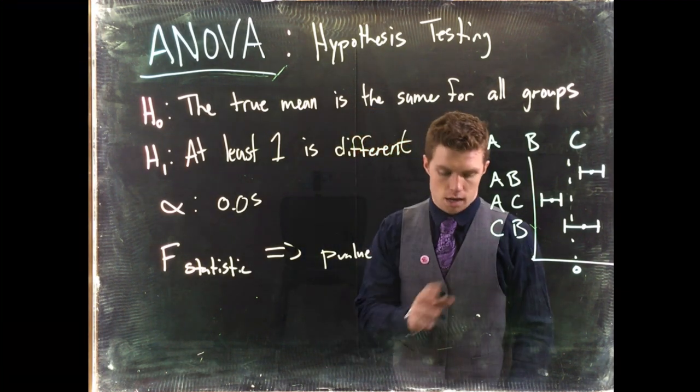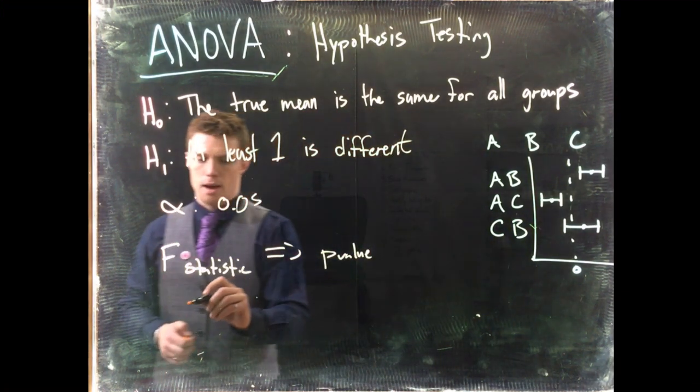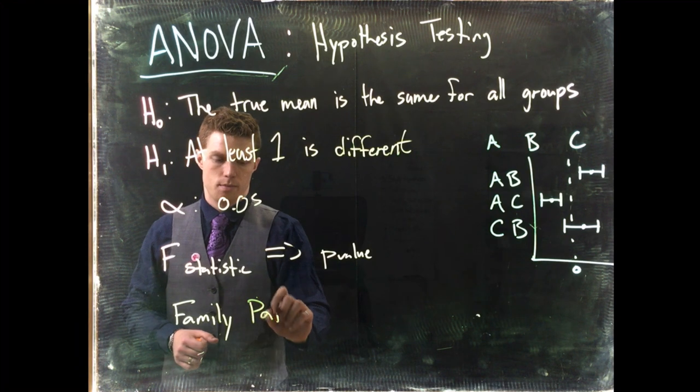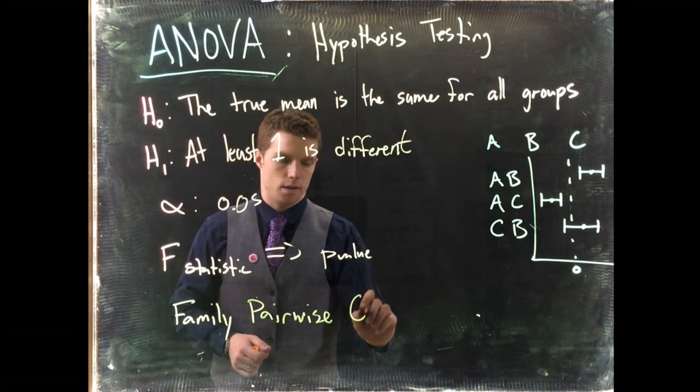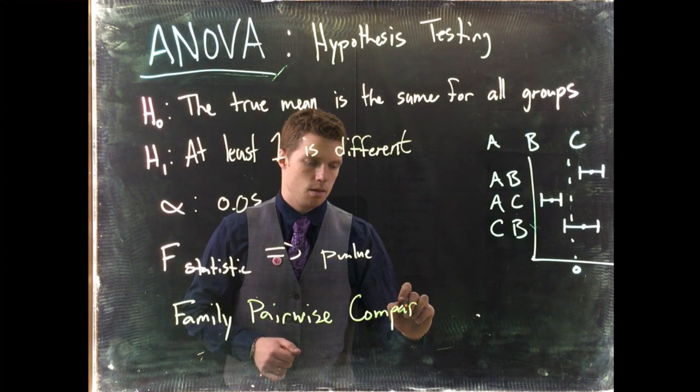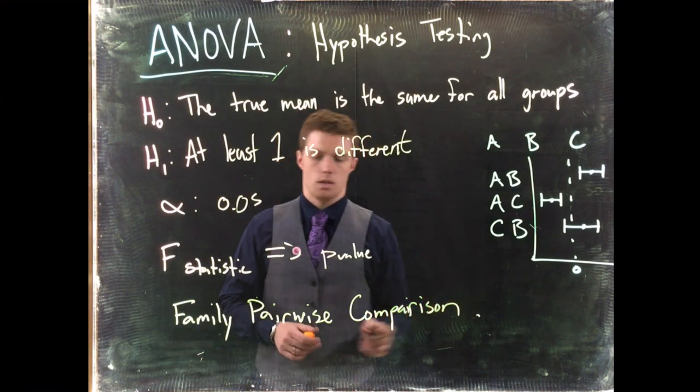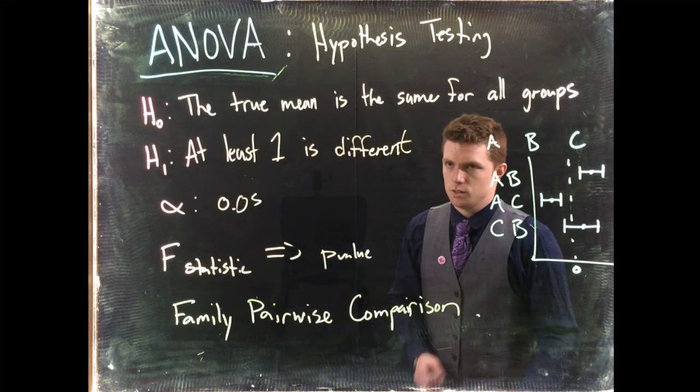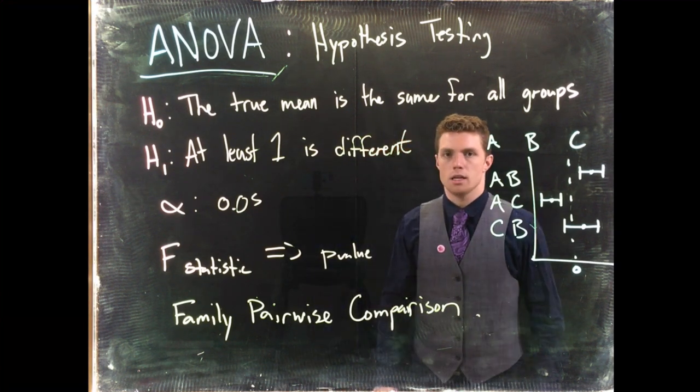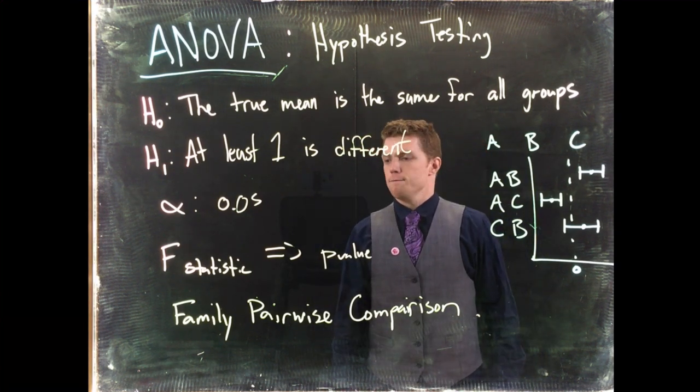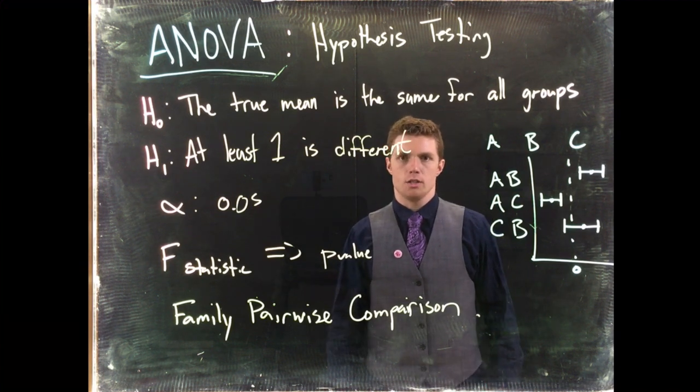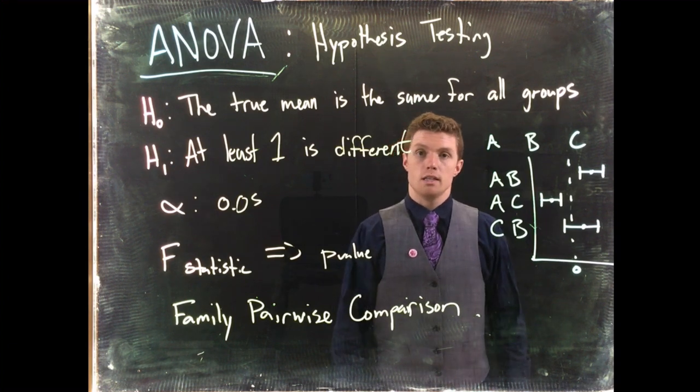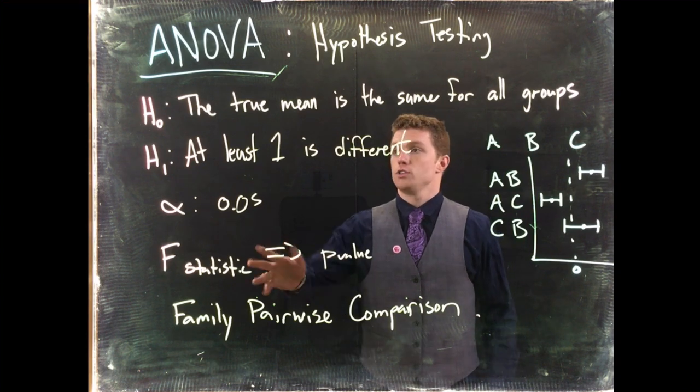So we have to do that with a post-hoc test, and we do it with what is called a family pairwise comparison. And so we do that family pairwise comparison. Specifically, I believe we're doing a Tukey comparison here. And there are lots of different post-hoc tests that you can do. We're not going to go into all of them. But in our software, there's a button that you can say to just do these pairwise comparisons after the ANOVA.